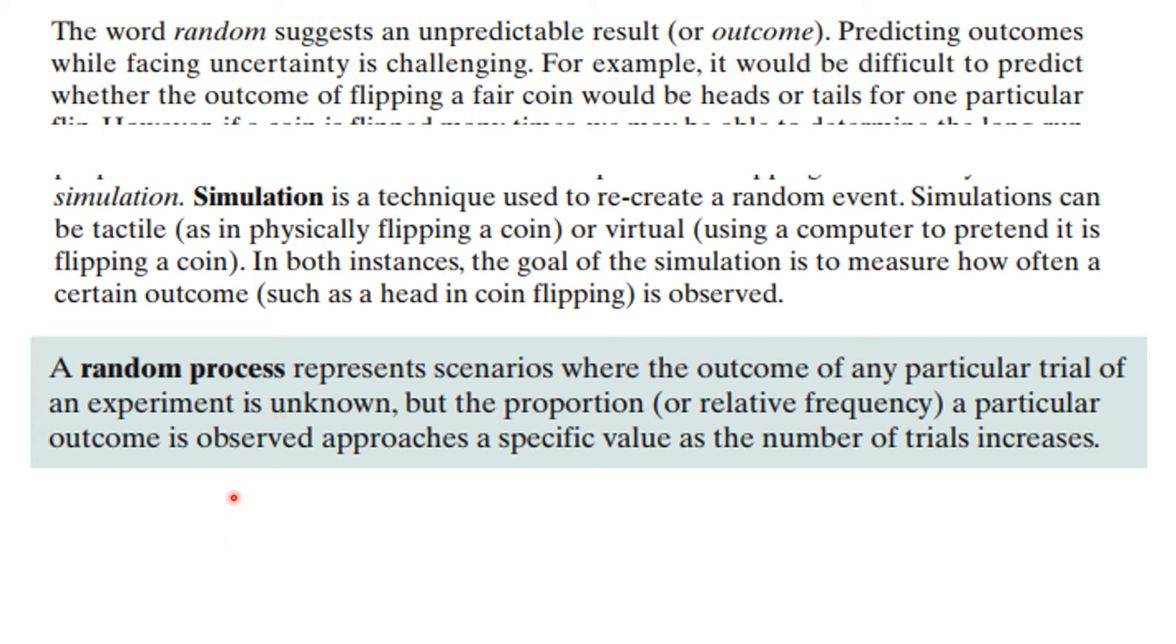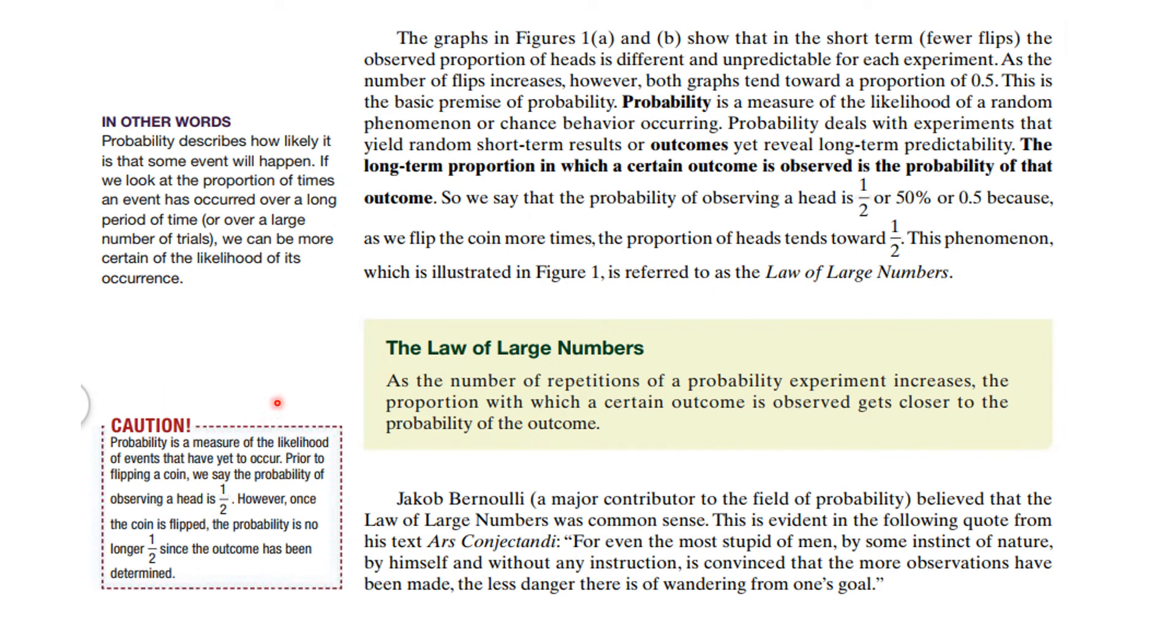Now in both instances, the goal is to measure how often something is observed. And that's an empirical experiment. Now, we are talking about random processes. These are scenarios where the outcome of any particular trial is unknown. But the proportion that observed approaches a specific value as the number of trials increases. Or at least, let me say that a different way. You hope it approaches that. Some things are truly, totally random. We can also then talk about probability. Probability is a measure of the likelihood of something occurring. And it deals with experiments. And so probability describes how likely it is that something will happen. If we look at the proportion of times an event occurs over a long period of time, a large number of trials, we can be more certain of the likelihood of its occurrence. And we talked about that being the law of large numbers, which is stated here. And so that's some important concepts for us to have in mind.